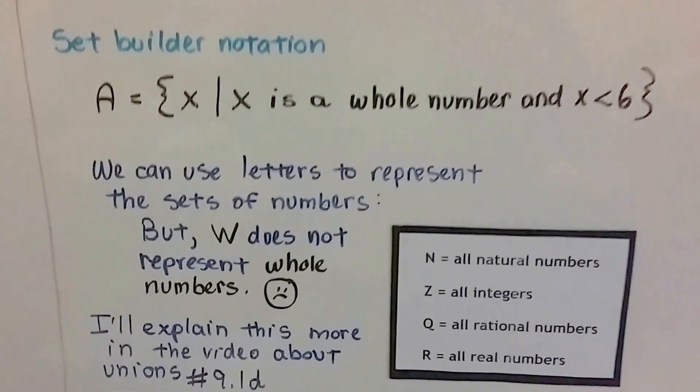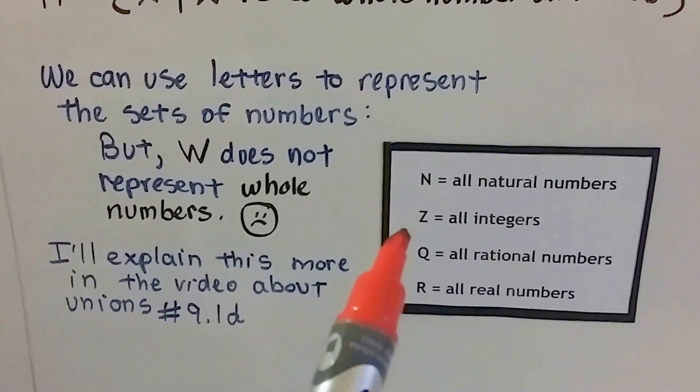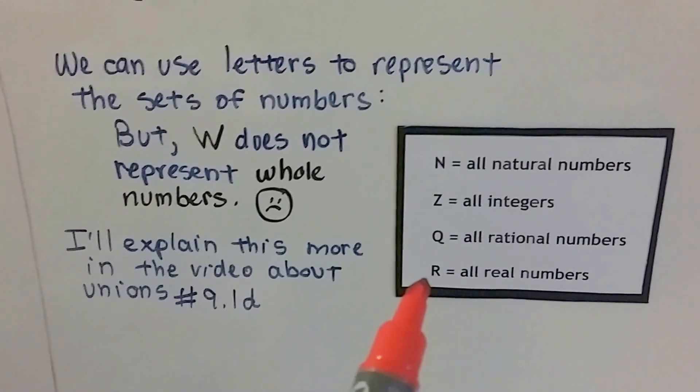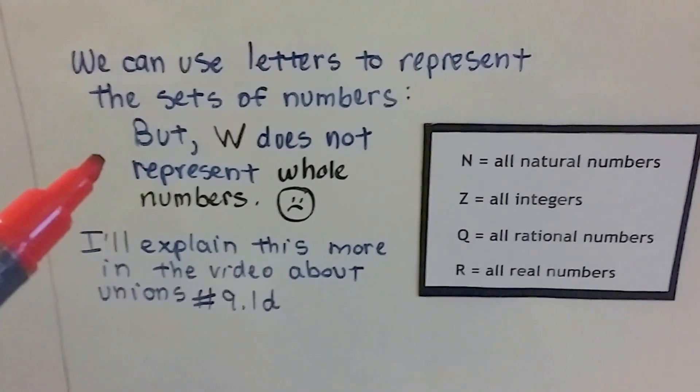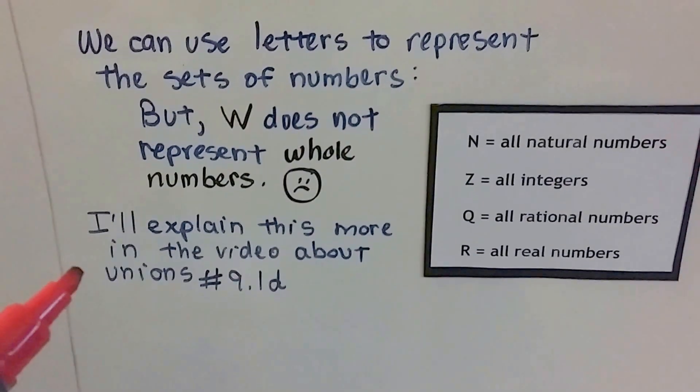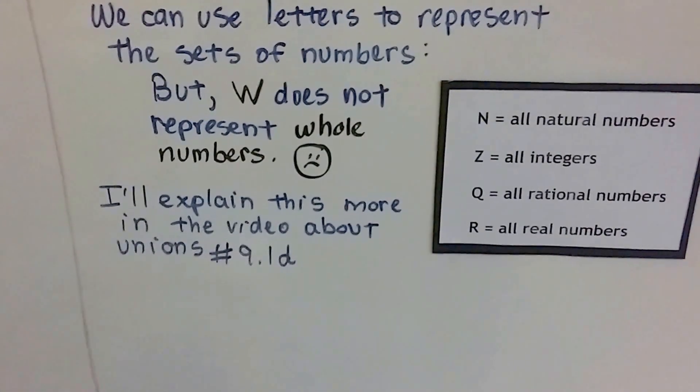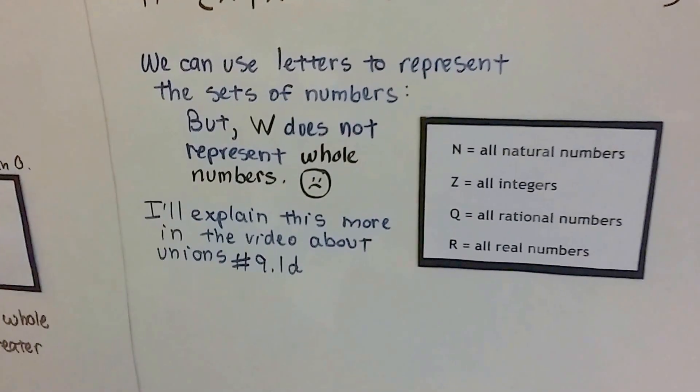We can use letters to represent the sets of numbers. We can use n for all natural numbers, z for all integers, q for all rational numbers, and r for all real numbers, but, sadly, w does not represent whole numbers. It just doesn't. And I'll explain more about this in video 9.1d when we talk about unions. I have a solution to this problem that a lot of mathematicians use.